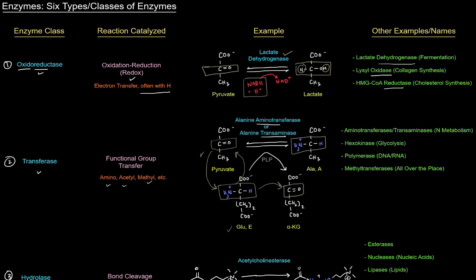In this reaction, PLP — pyridoxal phosphate — is used as a cofactor. Aminotransferases transfer amino groups and are also called transaminases; you see a lot of them in nitrogen metabolism, which makes sense since amino groups contain nitrogens. Hexokinases specifically add phosphate groups from ATP or GTP, and show up in glycolysis. DNA polymerase and RNA polymerase transfer nucleoside triphosphates or deoxynucleoside triphosphates. Methyltransferases transfer methyl groups and are found all over the place.